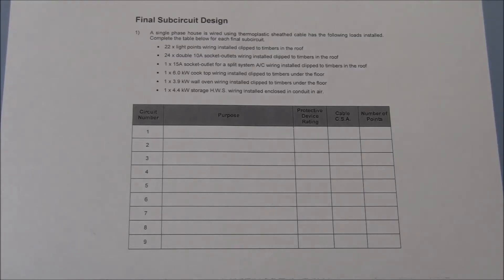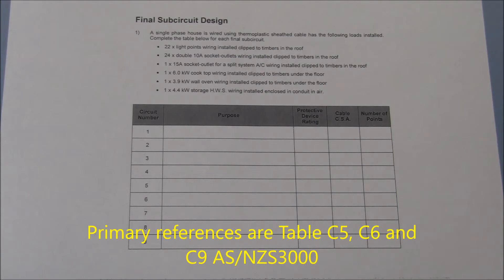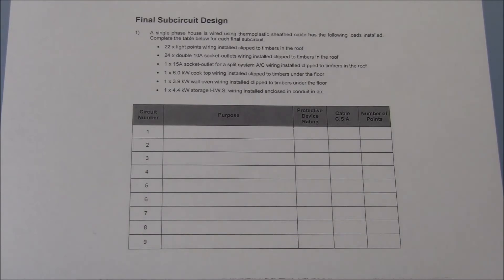This exercise is all about final sub circuit design. This particular installation is a single phase house that's been wired using TPS cable, and it has a list of the loads within the installation. We have to allocate the circuit number, the purpose, the protective device rating, the cable cross sectional area, and the number of points. We're going to use our basic electrical knowledge to determine both the cross sectional area and the protective device rating.